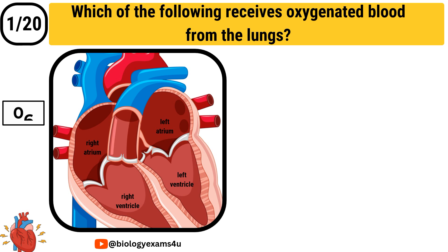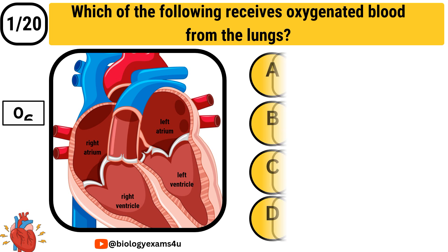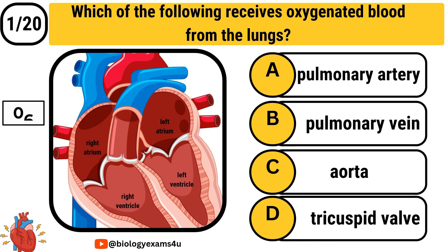Which of the following receives oxygenated blood from the lungs? Option A: pulmonary artery. Option B: pulmonary vein. Option C: aorta. Option D: tricuspid valve.